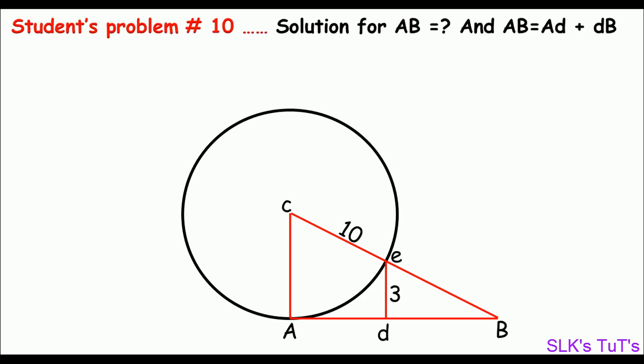Remember, we are asked to determine AB, and AB is just the summation of AD and DB. If you look at the figure, you can see CE is the radius of this circle. So we can also say CA is the radius of this circle. CE is 10 meters, so CA will also be 10 meters.